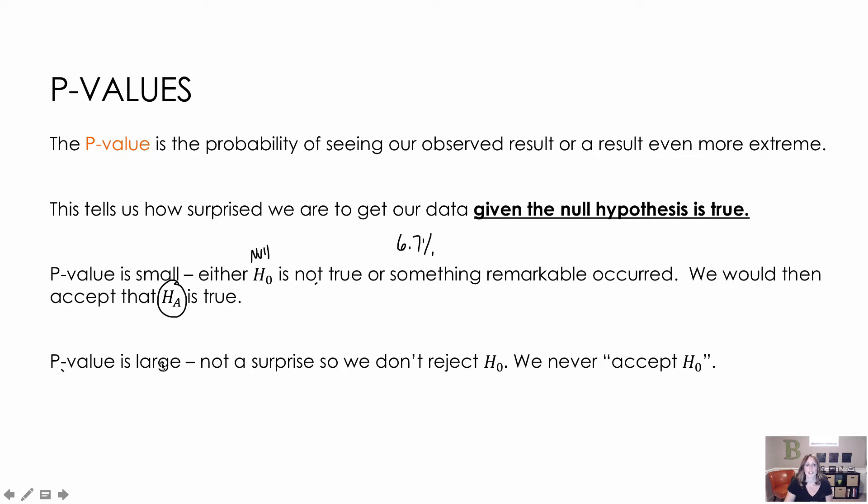If our p-value is large, so that is if we said the 90%, then we're not surprised. Because if the crack rate is actually 20% and I found 17% and it said 90% of the time that occurs, then I'm like, well, what's the big deal? It's going to occur 90% of the time. So I'm not going to reject the alternative or the null hypothesis. So I'm going to say I don't have enough information to say that 20% isn't true. Notice we never accept the null hypothesis.